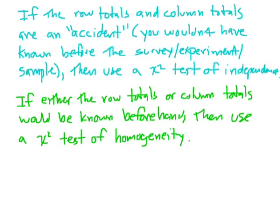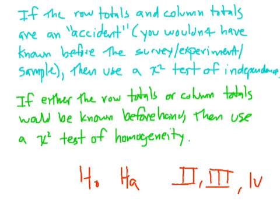To sum up: if the row totals and the column totals are an accident — meaning you would not have known before you started doing the survey or experiment — then you should use a chi-squared test of independence. If either the row totals or the column totals were known beforehand, meaning you knew you were asking that many people, then you should use a test of homogeneity. It comes down to your sampling design. Don't think about this too much though, because the only real difference is what you write in your null hypothesis and your alternative hypothesis — steps 2, 3, and 4 are basically the same.